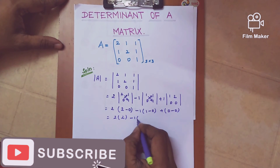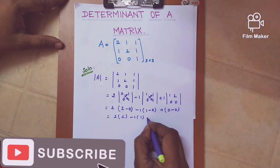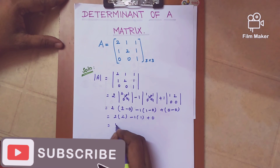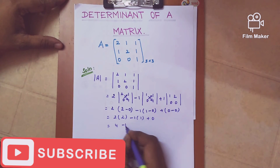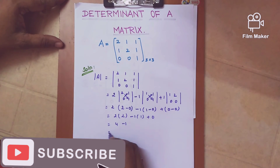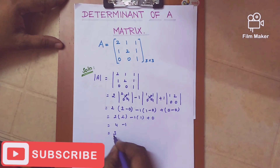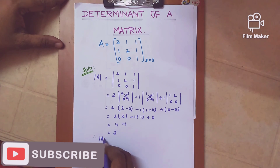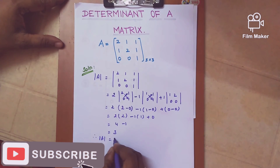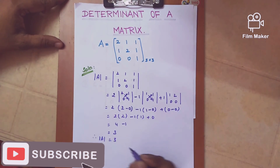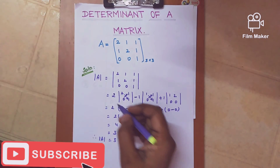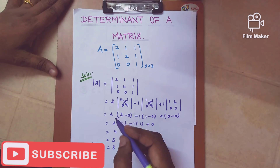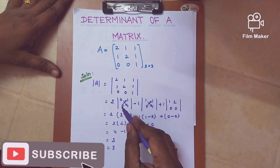Simplifying: 2×(2−0) minus 1×(1−0) plus 1×0 equals 2×2 minus 1×1 plus 0, which is 4 minus 1 equals 3. Therefore, the determinant of A is equal to 3.